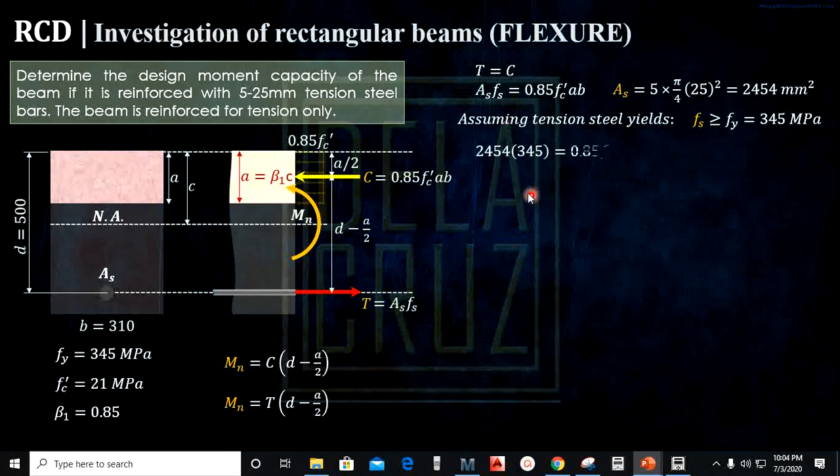Using this fy, equating, by the way fc prime here is 21 megapascal, as you see A can be solved. You can use shift solve here: 153mm. And if we solve A, we can directly get C because of this relationship. That is 153 over 0.85. Beta 1 here is 0.85 because fc prime is 21 megapascal. That is in the code. So our C is 180mm.